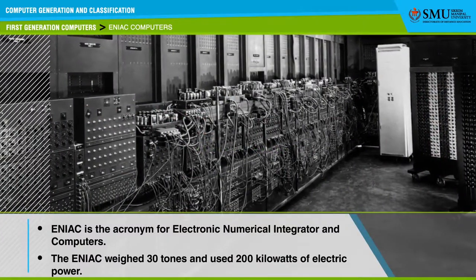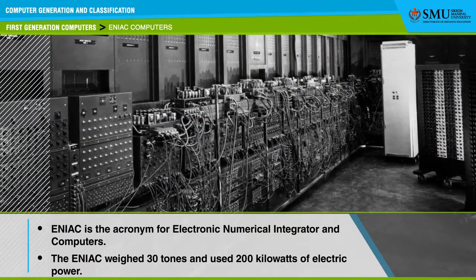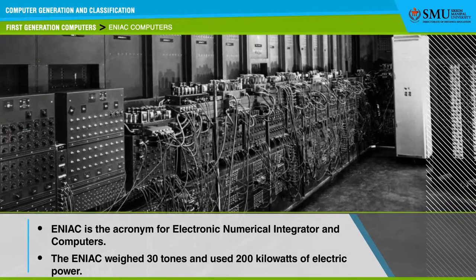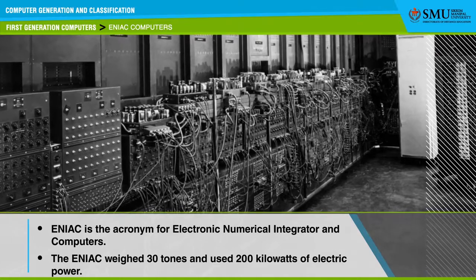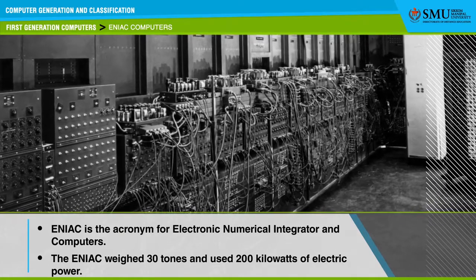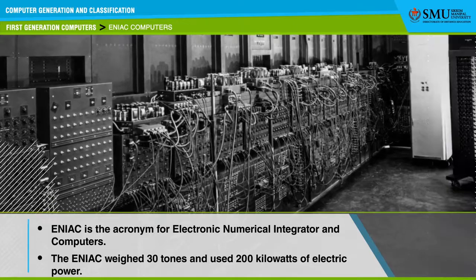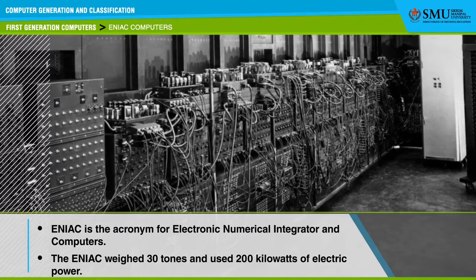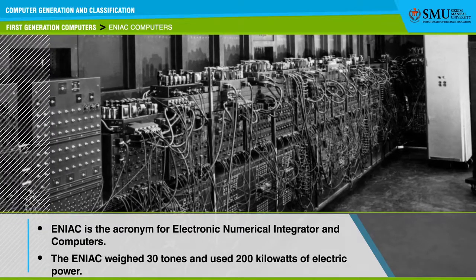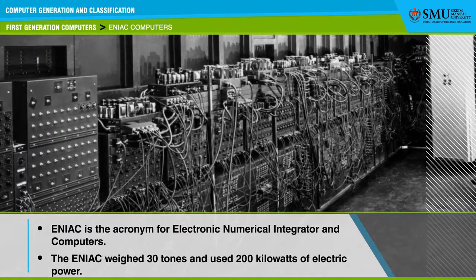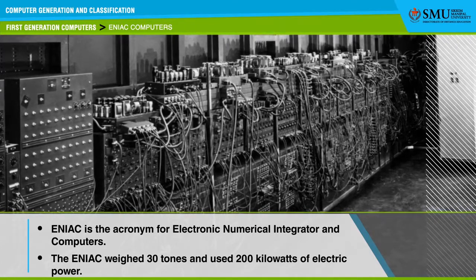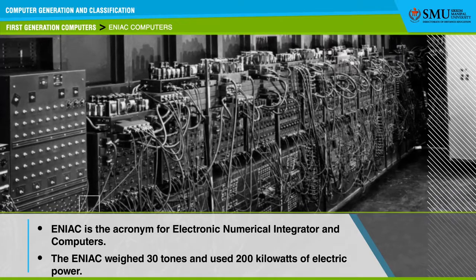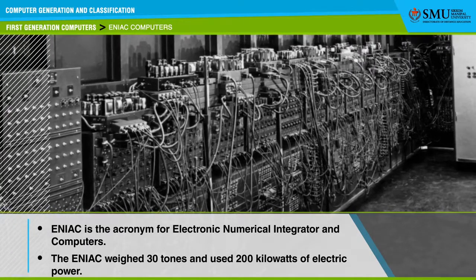ENIAC is the acronym for Electronic Numerical Integrator and Computer. It is the world's first operational electronic digital computer, developed by AMI Ordnance to compute World War II ballistic firing tables. The ENIAC weighed 30 tons and used 200 kilowatts of electric power. ENIAC contained electrical devices such as 18,000 vacuum tubes, 1,500 relays, and hundreds of thousands of resistors, capacitors, and inductors.